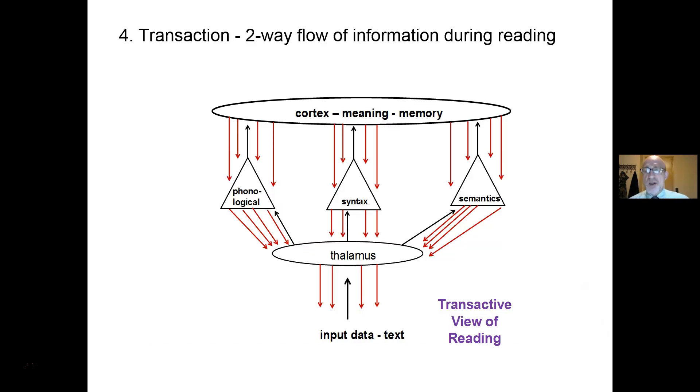Transaction, where both parties give to something in a transaction, says that there is a two-way flow of information as we read. Information goes from the page up to the thalamus and eventually up to the cortex, and we use the three cueing systems to identify the individual words. That's one way.